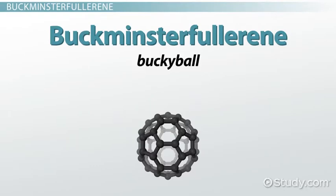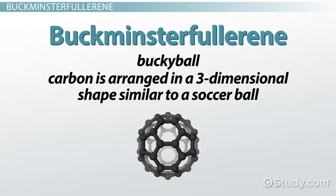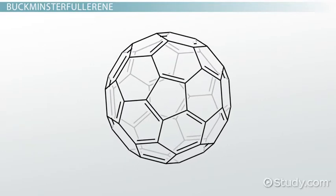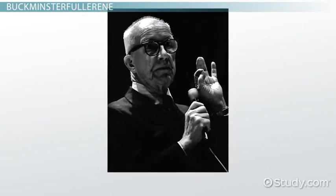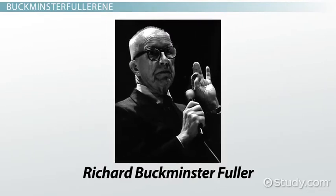Buckminster Fullerene, or a buckyball, is another example of an allotrope of carbon. In this allotrope, carbon is arranged in a three-dimensional shape similar to a soccer ball. The caged shape gives it many unique properties which are still being studied by scientists. Buckyballs were discovered by scientists in the 1980s and were given their name after scientist and architect Richard Buckminster Fuller, who first explored the geometric structure that buckyballs exhibit.